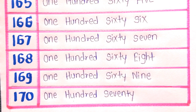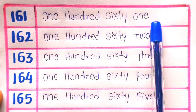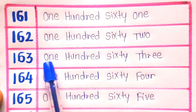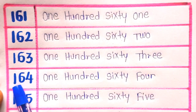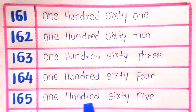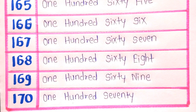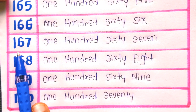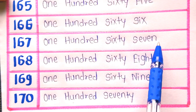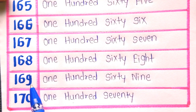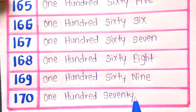Now let's revise with me. 161 is ONE HUNDRED SIXTY ONE. 162 is ONE HUNDRED SIXTY TWO. 163 is ONE HUNDRED SIXTY THREE. 164 is ONE HUNDRED SIXTY FOUR. 165 is ONE HUNDRED SIXTY FIVE. 166 is ONE HUNDRED SIXTY SIX. 167 is ONE HUNDRED SIXTY SEVEN. 168 is ONE HUNDRED SIXTY EIGHT. 169 is ONE HUNDRED SIXTY NINE. And 170 is ONE HUNDRED SEVENTY.